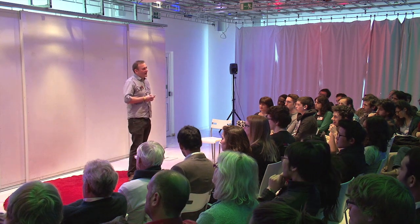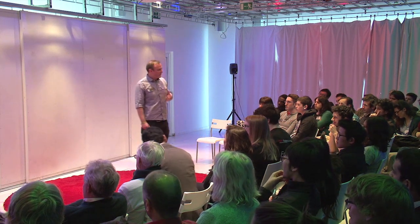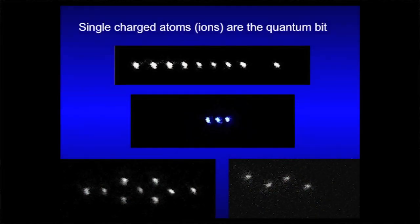Right. And now let's look at how we actually encode information, how we store information, and we actually store it in individual atoms, in single atoms. And each bright dot you see here is actually one atom, and each of these atoms is a quantum bit. And that's what we do.